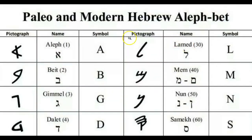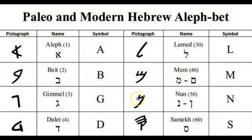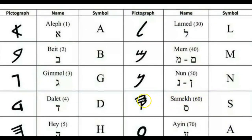The twelfth letter is the Lom, or Lamad, which makes the L sound and represents teaching, a leader, or a staff. Then we have the Mom, which represents water and looks like waves — it makes the M sound. The Nun represents seed, life, or fish and makes the N sound. Samak is the staff, or to support and prop, and makes the S sound.